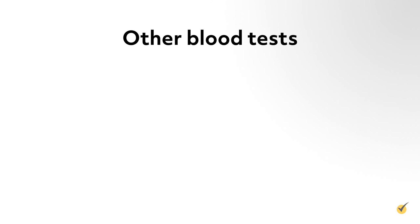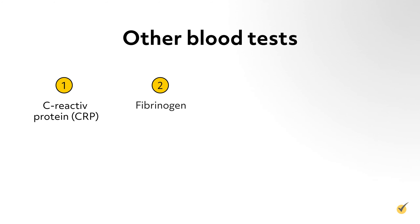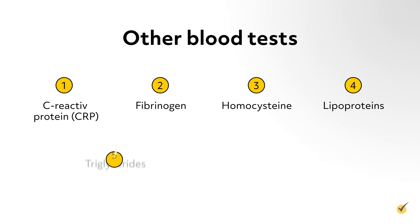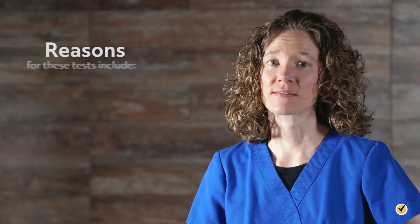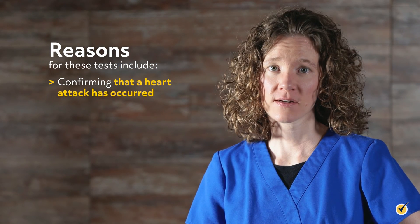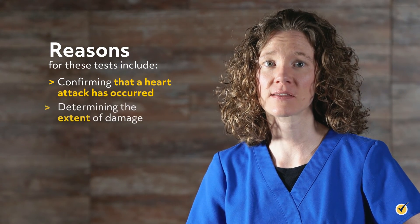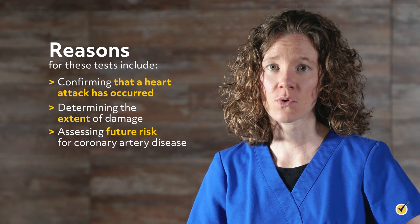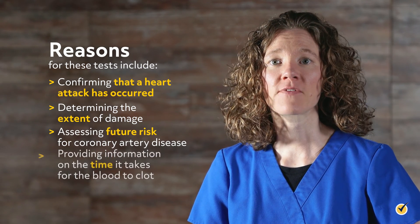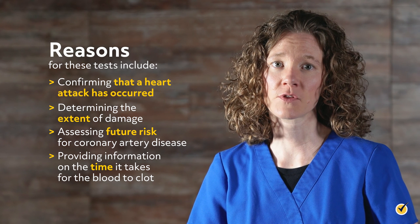Some other blood tests include C-reactive protein (CRP), fibrinogen, homocysteine, lipoproteins, triglycerides, brain natriuretic peptide (BNP), and prothrombin. Reasons for these tests include confirming that a heart attack has occurred and determining the extent of damage, assessing future risk for coronary artery disease, and providing information on the time it takes for the blood to clot.